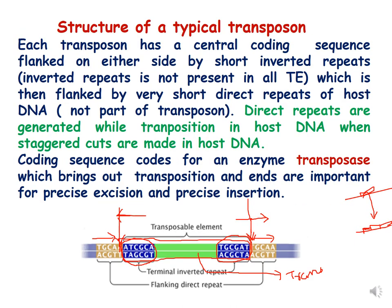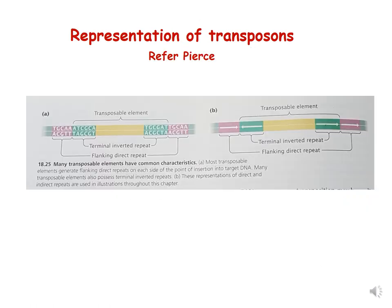This is the typical structure of a transposon which we have discussed: in the center it has a coding sequence which codes for transposase, flanked by inverted repeats, and then it makes direct repeats in the host genome. You can refer to the previous lectures for understanding this in detail, including the structure of transposons and the kinds of transposons found in different organisms.